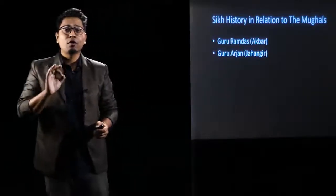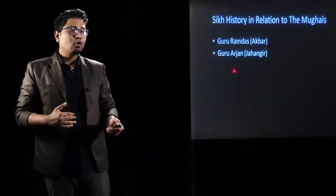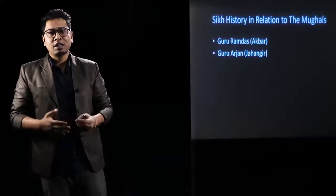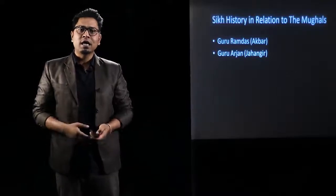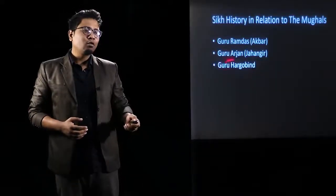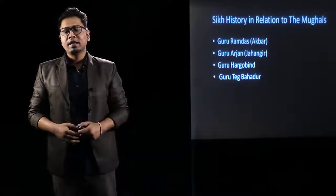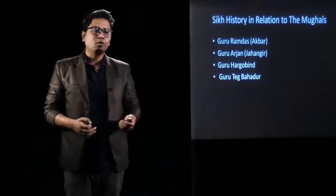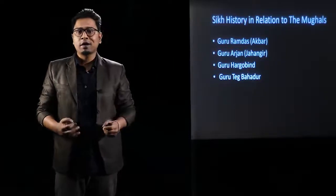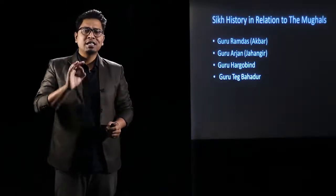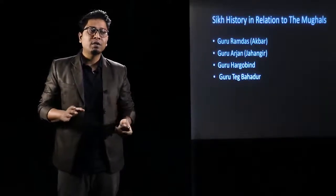Guru Arjan was executed by Jahangir — this is the point where the relationship between the Mughals and Sikhs began to sour. Guru Arjan had given shelter to the rebel prince Khusrau, and Jahangir had him executed. Guru Arjan's son, Guru Hargobind, was also made captive by Jahangir. It is said this was the point where Sikh militarization against the Mughals began.